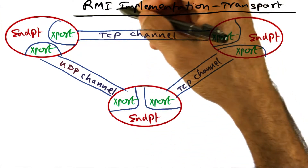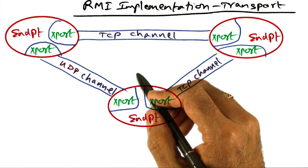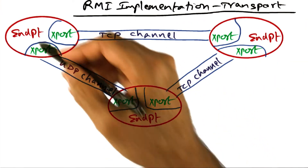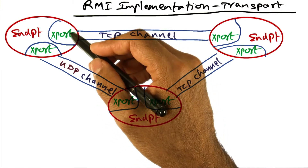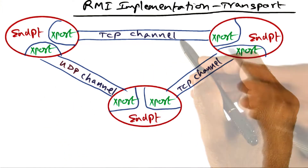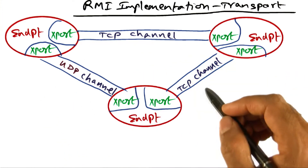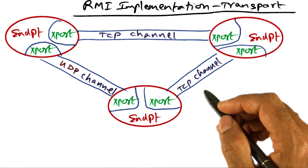The abstractions that the transport layer provides are endpoint, transport, channel, and connection. I'll talk about each of these things in a little bit more detail.